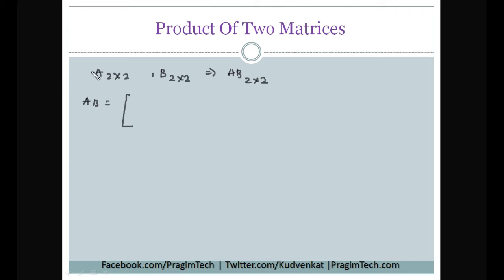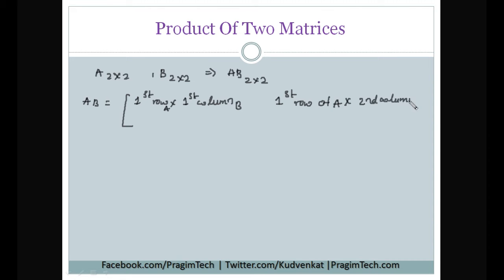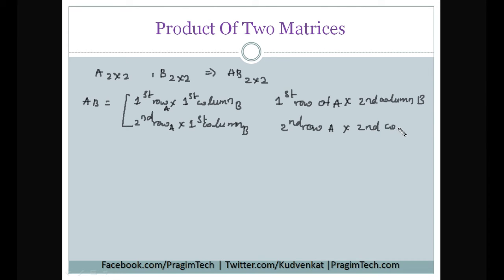To obtain AB, we take the first row of matrix A and multiply it with the first column of matrix B. The second element is the first row of A multiplied with the second column of B. Similarly, the second row of A is multiplied with the first column of B, and the second row of A with the second column of B.